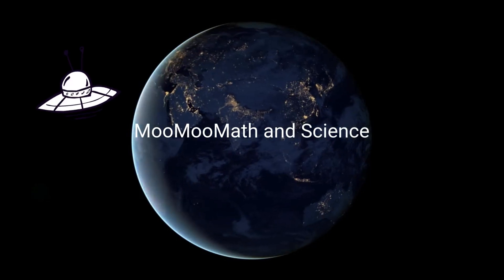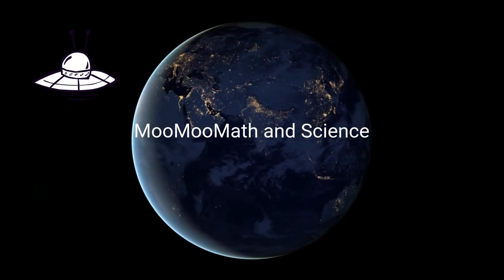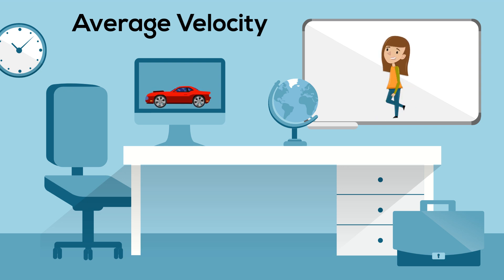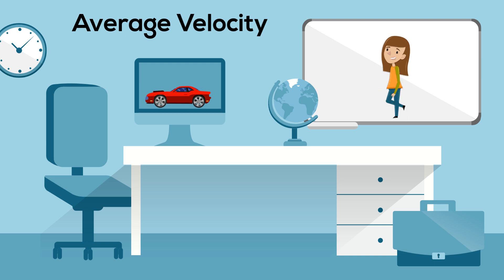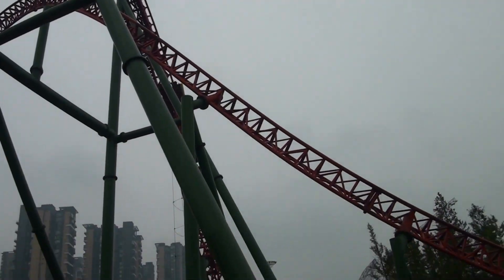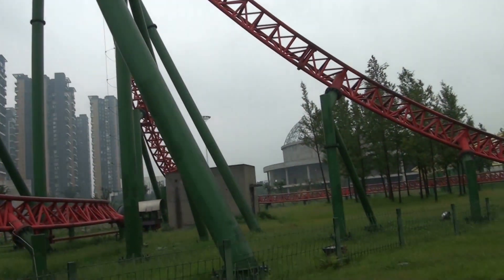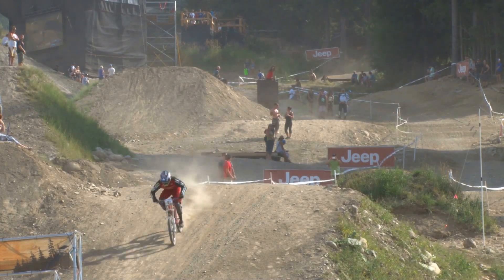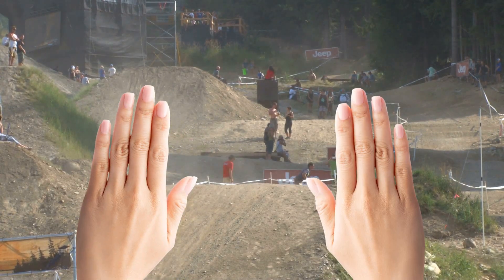Welcome to Moo Moo Math and Science. In this video, I'd like to cover how to calculate average velocity. In simple terms, velocity is speed in a particular direction. Here are several examples. Velocity is a vector because it measures magnitude and direction.